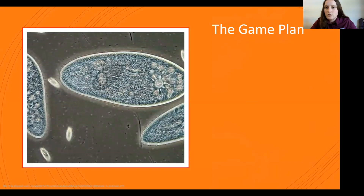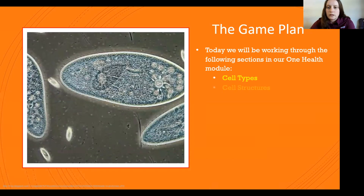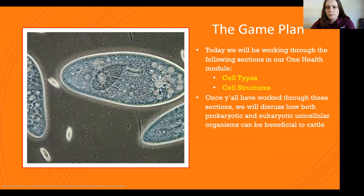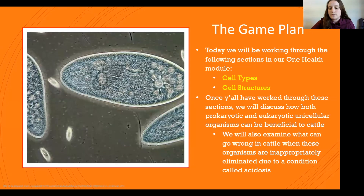Here's our game plan for today. We'll start by working through two sections in our One Health module — cell types and then cell structures. Once we've done that, we'll discuss how both prokaryotic and eukaryotic unicellular organisms can be beneficial to cattle, and we'll examine what can go wrong when these organisms are inappropriately eliminated due to a condition called acidosis. That'll be really fun stuff when we get to it.